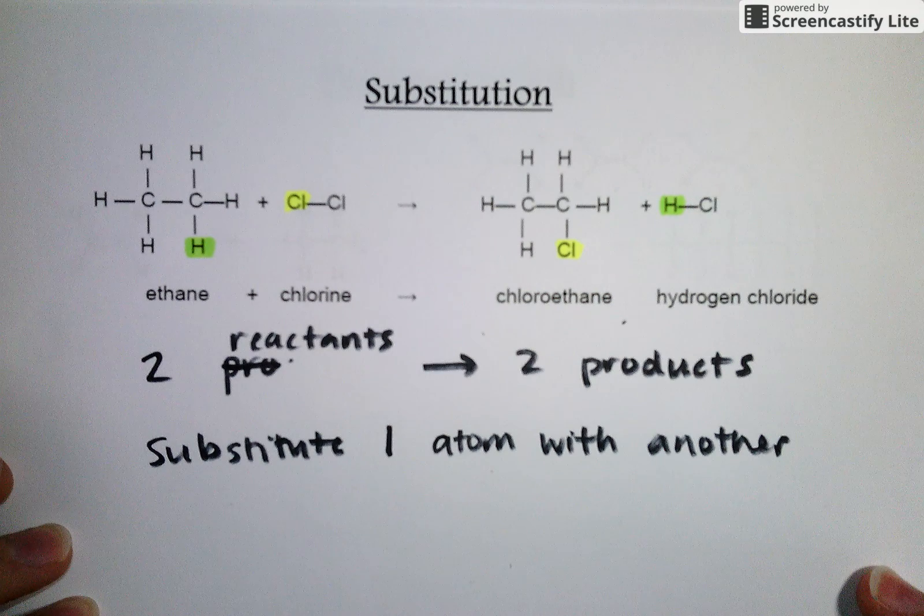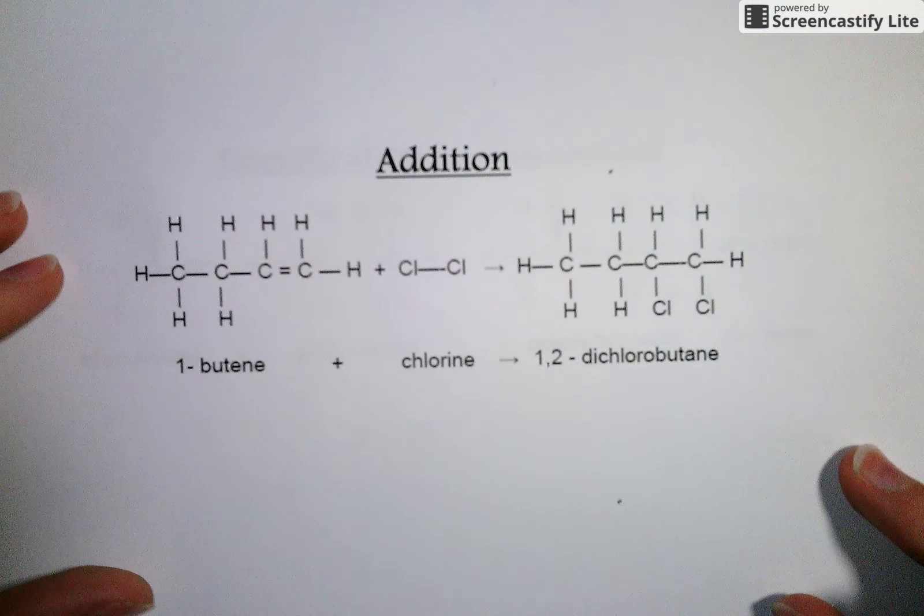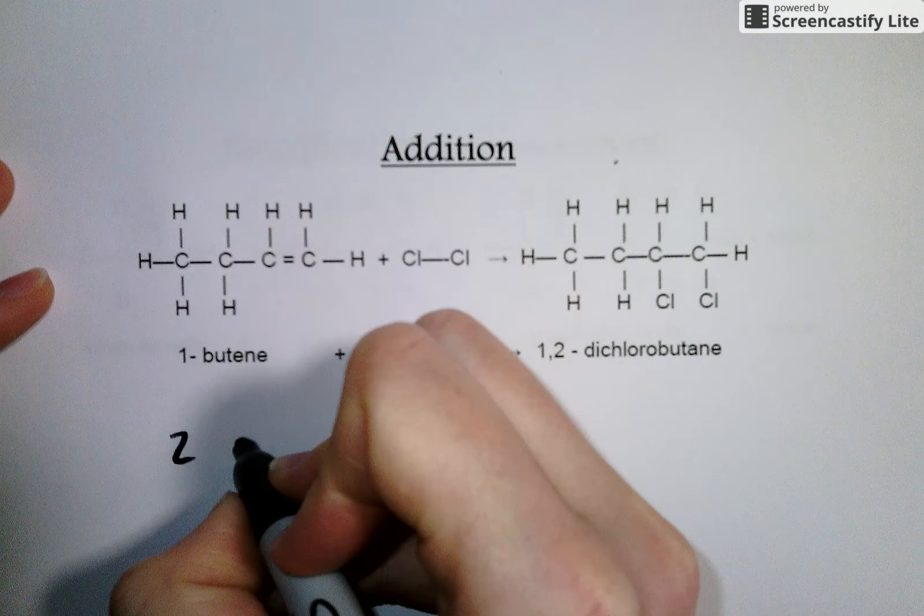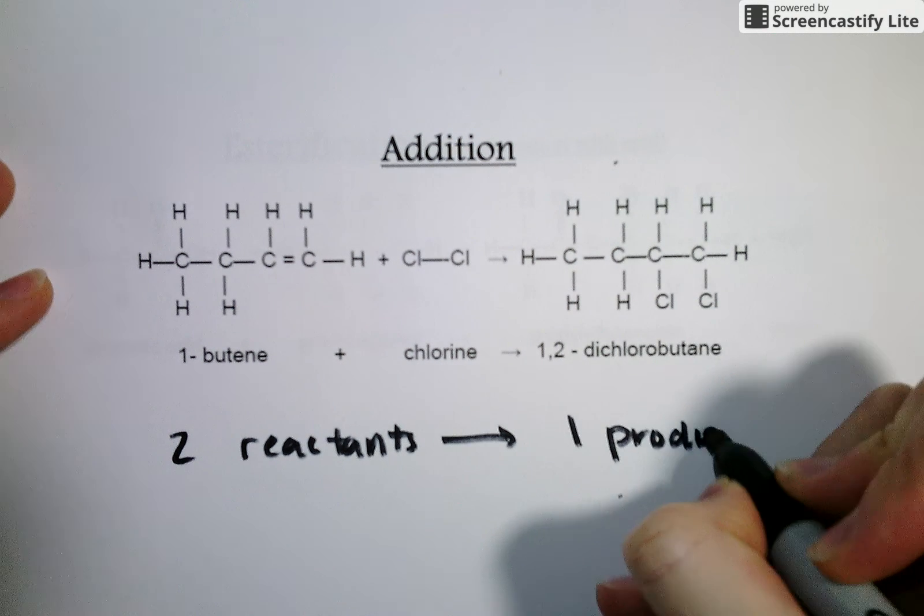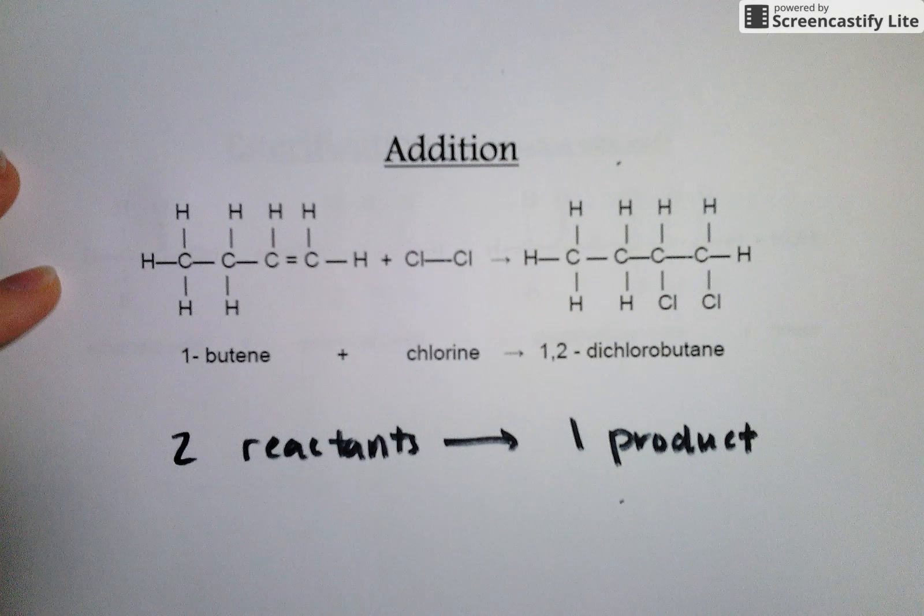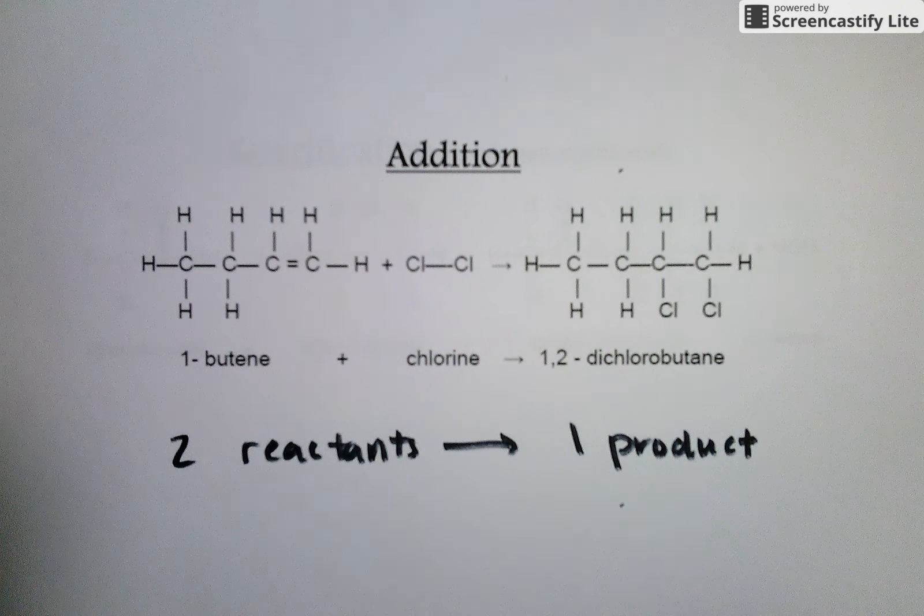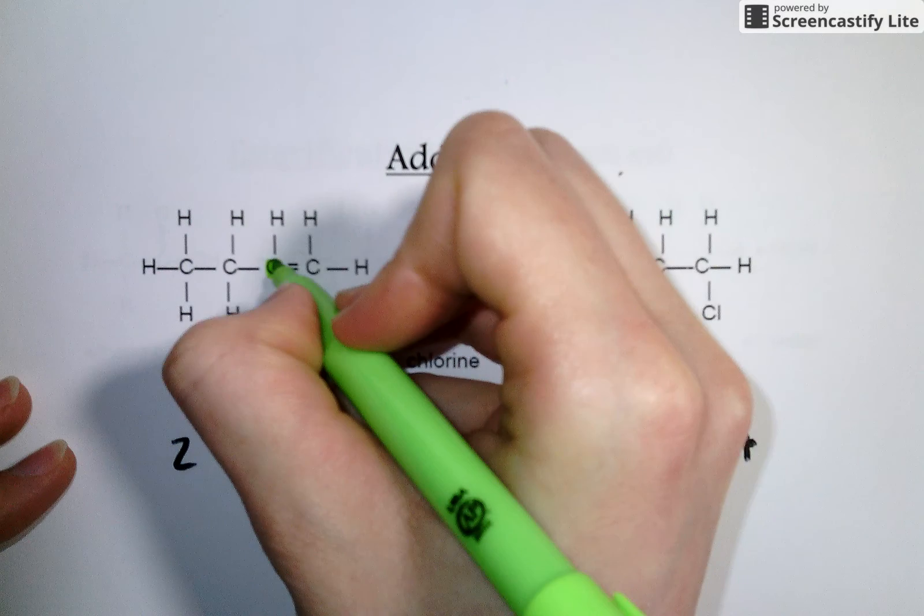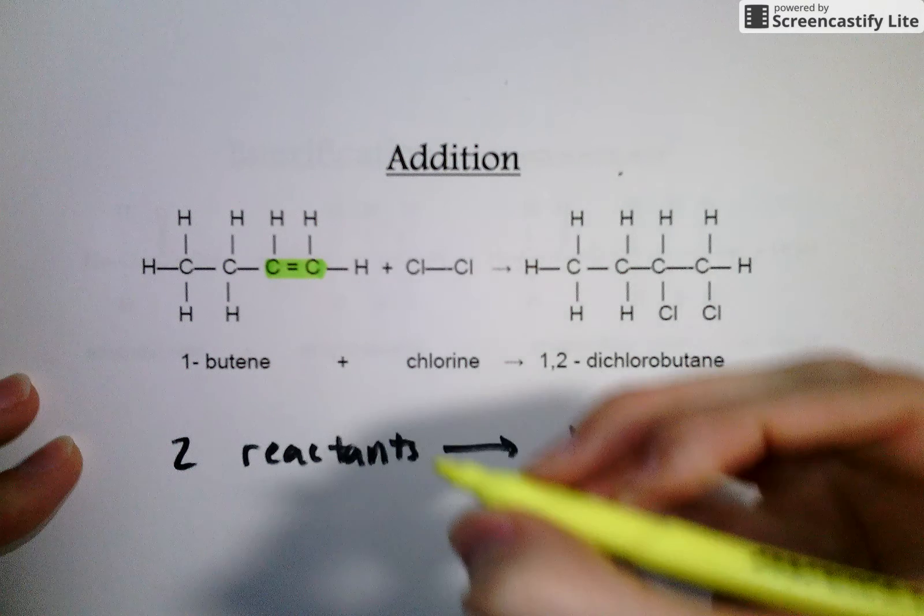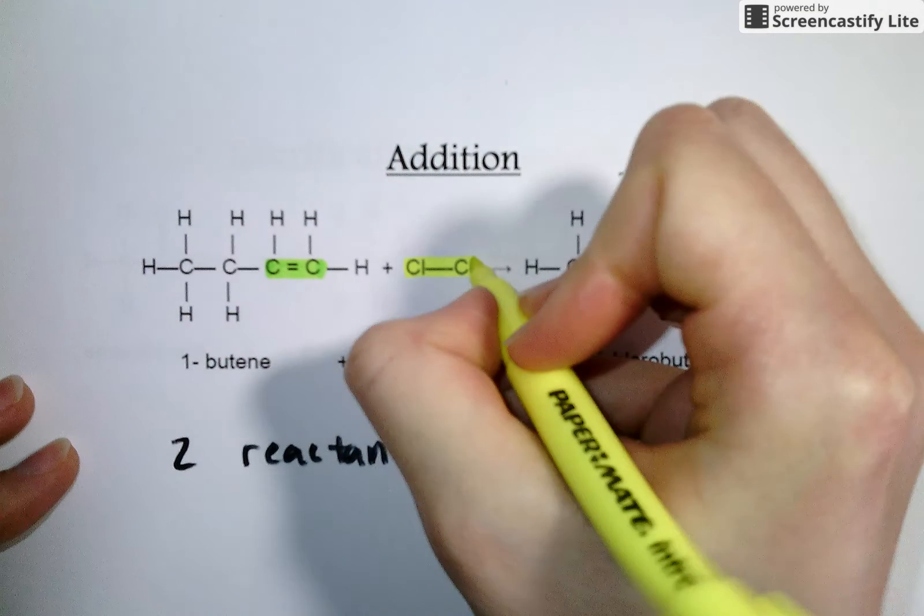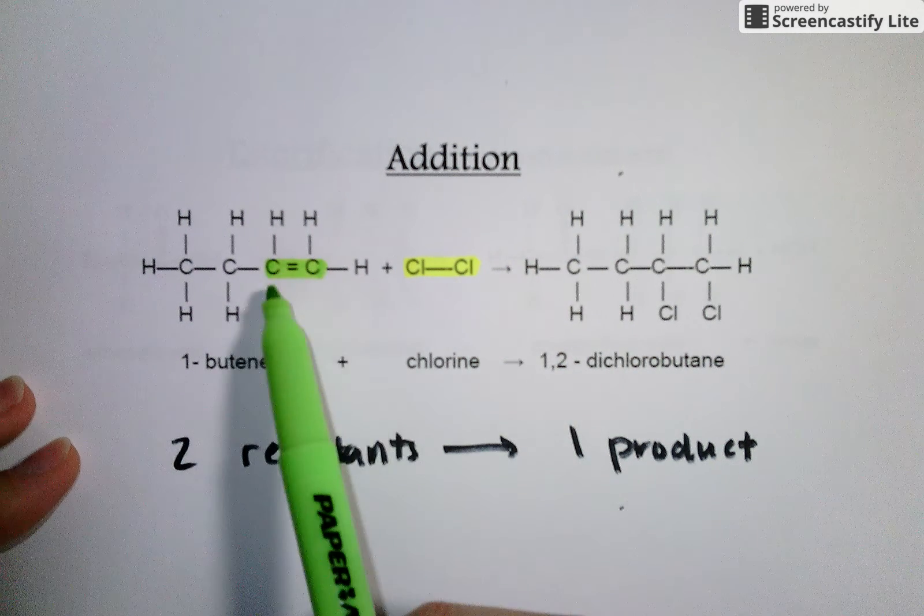This stands in contrast to the second type of organic reaction, which is addition. And here what you see is that we're taking two reactants and we're changing it into one product. Let's take a look at what's actually going on here. When we have our initial molecule, in this case one butene, we have a double bond between the carbons. And that's taking up two of their possible four bonding sites. So when this chlorine atom comes along, its objective is to try and bond each of those carbons.